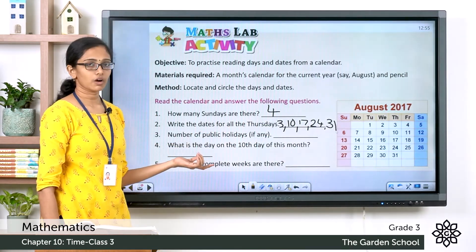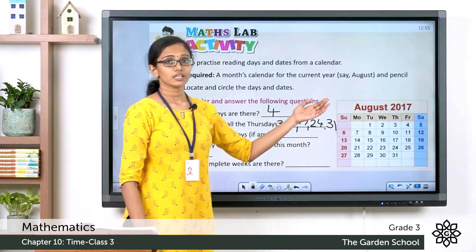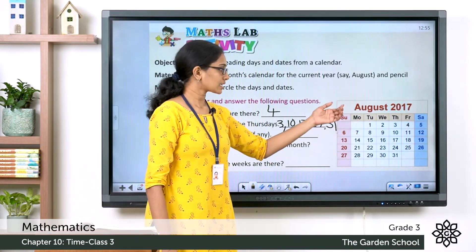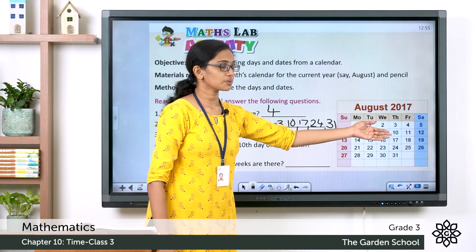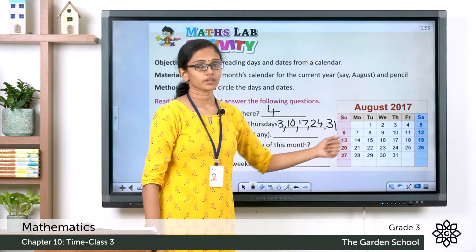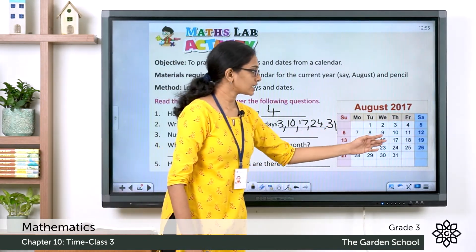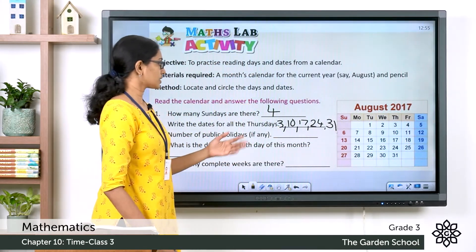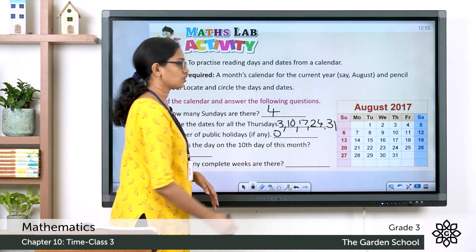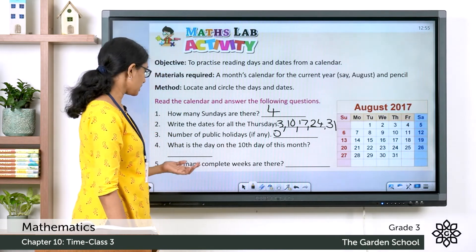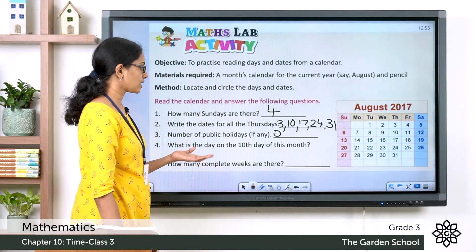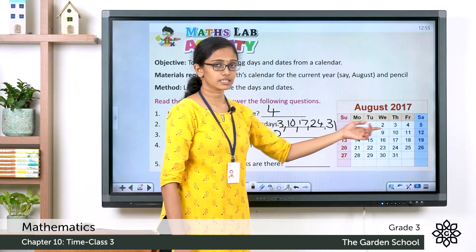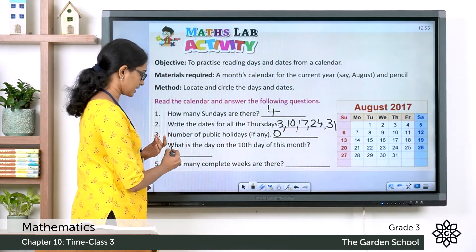The next question asks for the number of public holidays, if any. Public holidays other than Sundays are also marked in red. In this calendar there are no public holidays marked, so the answer is zero. The following question asks: what is the day on the 10th of this month? The 10th is a Thursday.